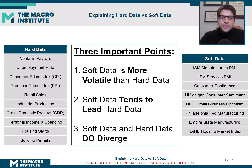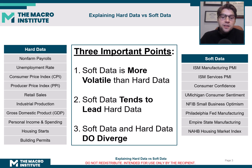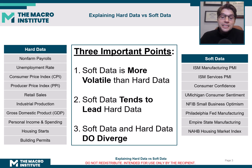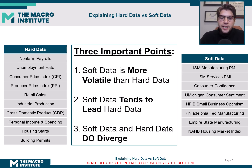So let's get into the three important points. One, soft data is more volatile than hard data. Two, soft data tends to lead hard data. And three, soft data and hard data do diverge from time to time.